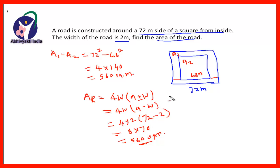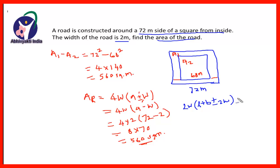To summarize: for a square, area of road = 4W × (A ± W) — use plus when the road is on the outer side, minus when it is on the inside. For a rectangle, area of road = 2W × (L + B ± 2W) — plus sign when outer, minus sign when inner.